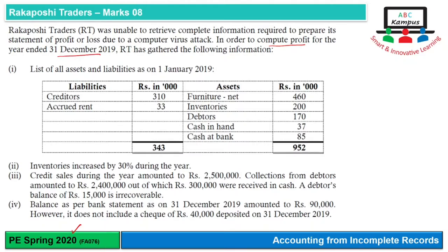A list of assets and liabilities is given. The date of value is opening time, 1st January 2019, which includes accrued rent (credit), furniture, inventories, debtors, and cash in hand or cash in bank. From these assets and liabilities values, we can find the opening capital — that is assets minus liabilities.